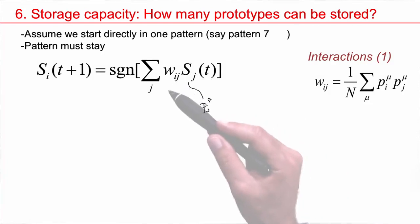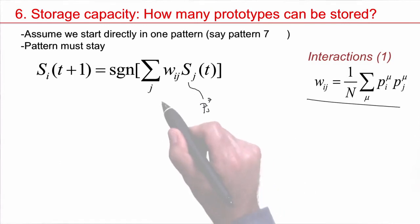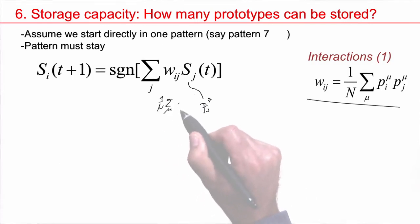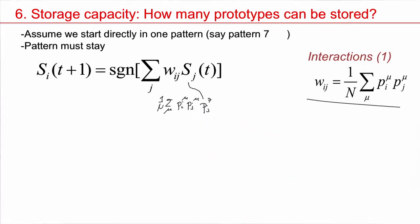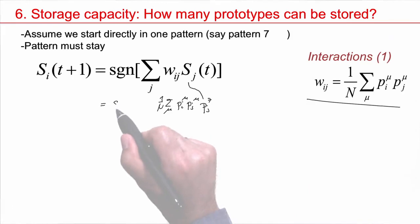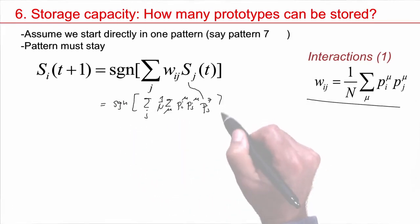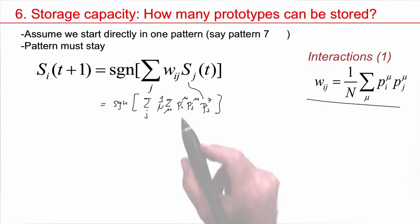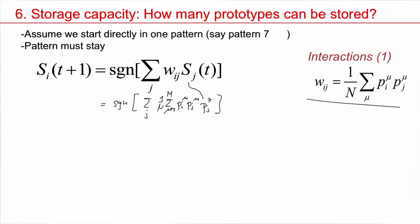Now what do we know about the weights? Well, for the weights we have this formula, which I just plug in. So I have a 1 over n, sum over mu, p_i^mu, p_j^mu. Suppose we have m patterns, so the sum runs over all the patterns from 1 to m. m is, for example, 25. And as we sum up we have mu equal 1, 2, 3, 4, 5, 6, 7...